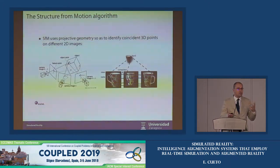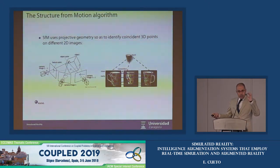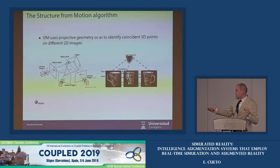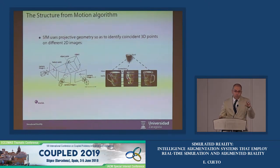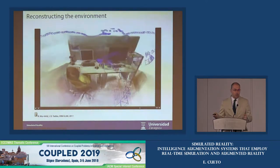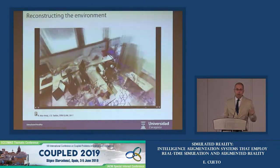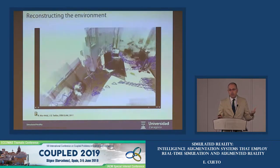How is it possible? First, you need to recognize equivalent points in different pictures. There are very efficient algorithms to do that. Once you recognize the same physical point in several pictures, by tracing rays from the camera to the projection of these points in the pixel space and intersecting these rays, you arrive at the 3D position of each point very accurately. This is a 3D reconstruction of a lab in the university — the blue pyramids represent the camera positions at several time instances.